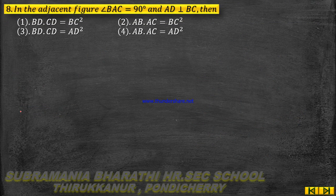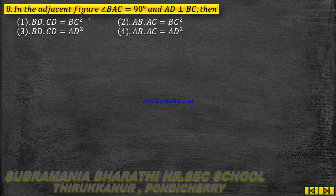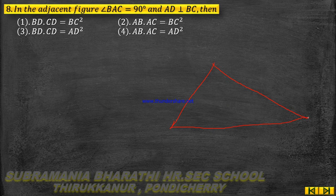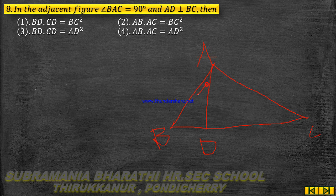Next, the 8th question. In the adjacent figure, angle BAC is equal to 90 degrees and AD is perpendicular to BC. This gives us an adjacent figure similar to Pythagoras's theorem, forming three triangles within the figure.